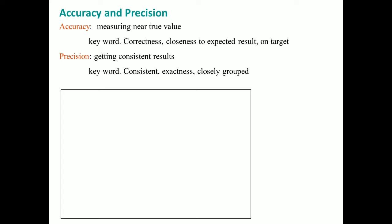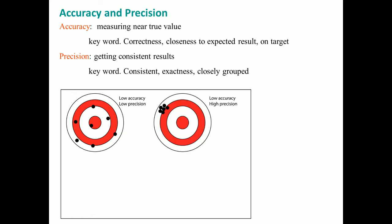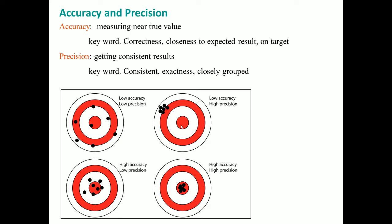There are four types. We could have low precision because it's all scattered and low accuracy. Then there is low accuracy and high precision - low accuracy because it is far from the target in the center, but high precision because they're all grouped together. This is high accuracy because it's close to the center, but low precision because it's still scattered. The best one is high accuracy and high precision because the dots are all clustered together right in the middle.